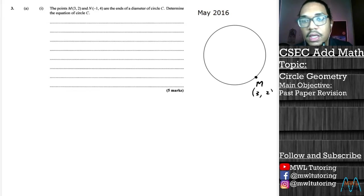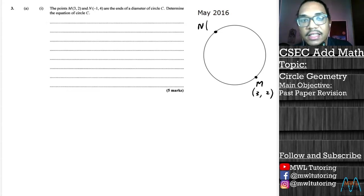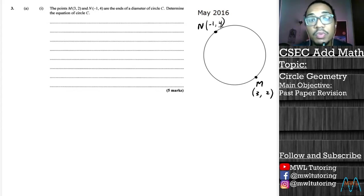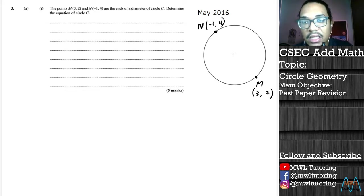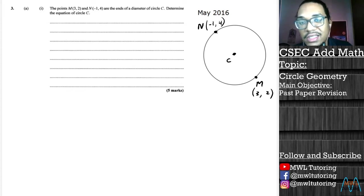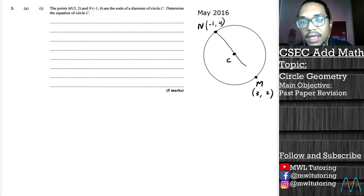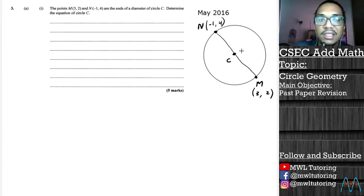Let's put M down as (3, 2) and N up here as (-1, 4). What the question says is that these points are the ends of a diameter, which means there's a third point the question is secretly telling us about — which is the center of the circle. The line connecting M and N passes through that center.